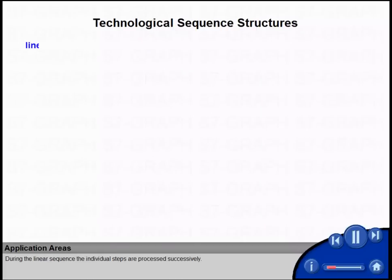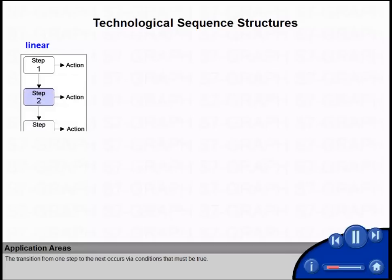During the linear sequence, the individual steps are processed successively. One step may contain different actions. The transition from one step to the next occurs via conditions that must be true.